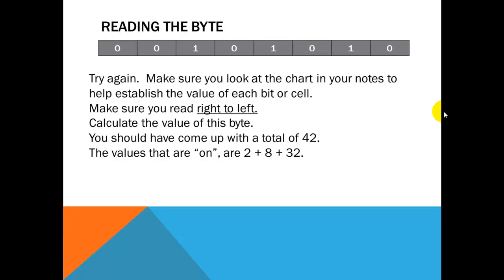Now, try again. Make sure you look at the chart in your notes to help establish the value of each bit or cell. Make sure you read right to left. Calculate the value of this byte. You should have come up with a total of 42. The values that are on are 2 plus 8 plus 32.